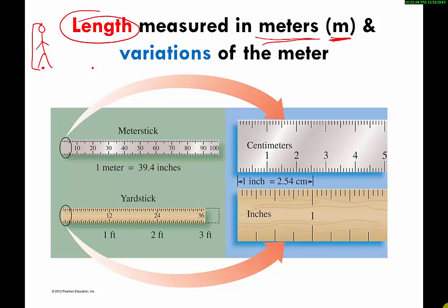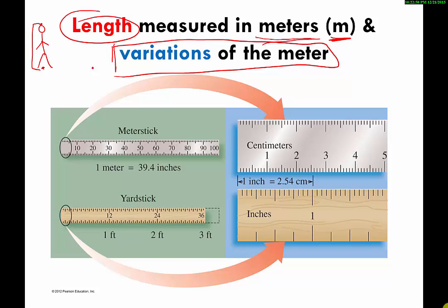The metric system has a special unit for measuring length called the meter — the abbreviation is a lowercase m. One meter is about a little bit more than one yard long. Another way to think about it: it's roughly the length from your shoulder to the tips of your fingers when you stretch your arm out as far as it can go. We'll talk about variations on the meter in a little bit.